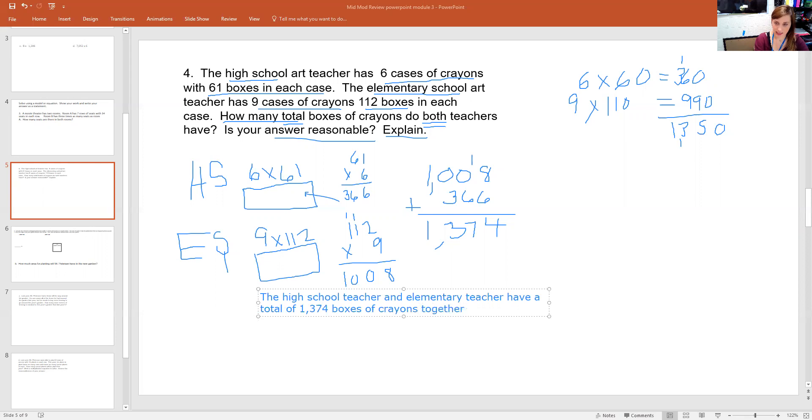And then when it says, is your answer reasonable, I can say my answer is reasonable because it is close to my estimate of 1,350.